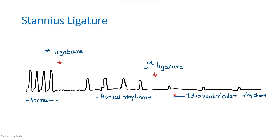From this we can prove that the sinus venosis, the atria, and ventricles can each contract at their own rhythm. But sinus venosis is the pacemaker because its impulse production rate is higher than that of the atria and the ventricles. This is the effect of stannous ligature.